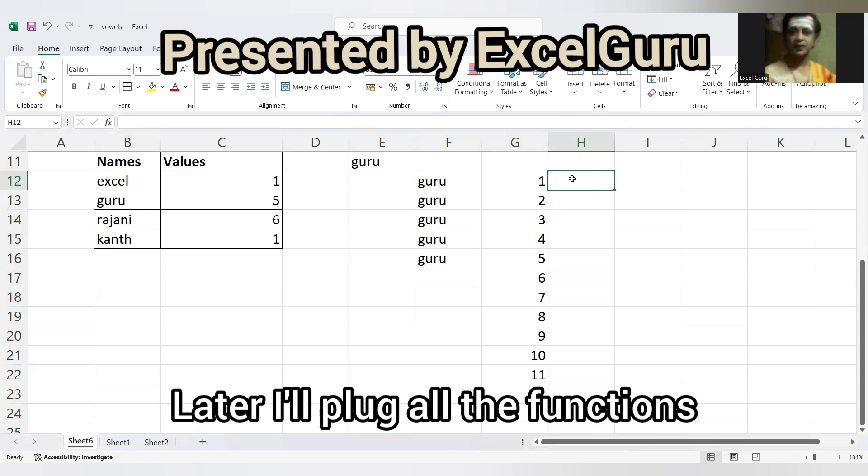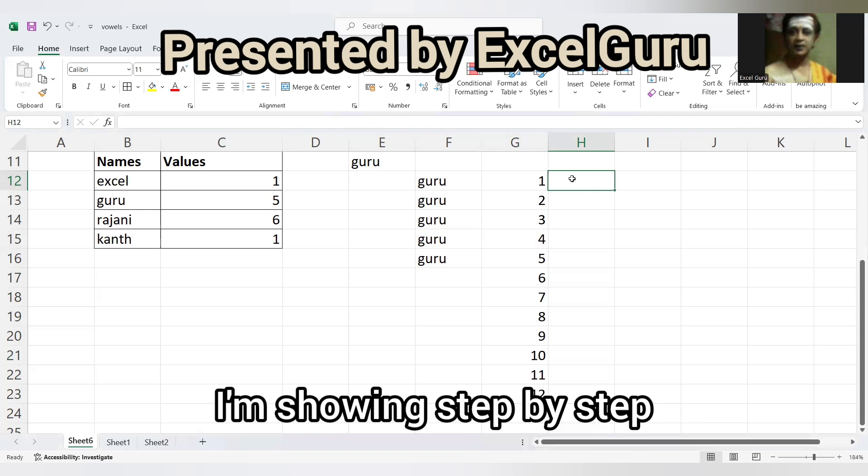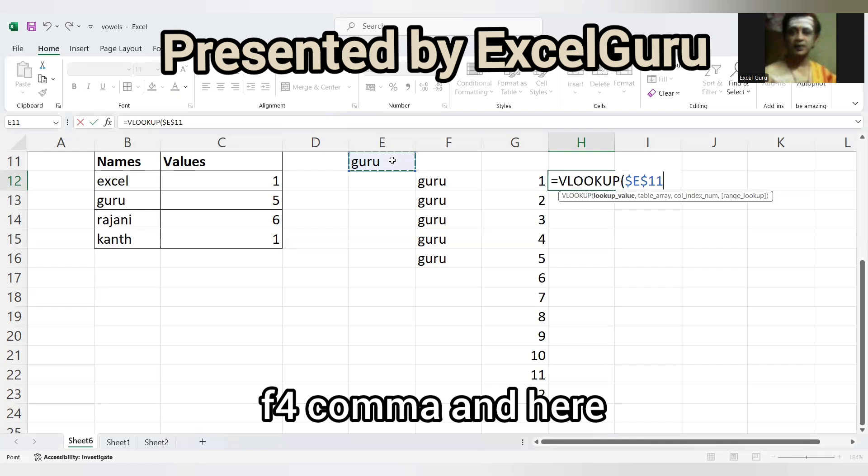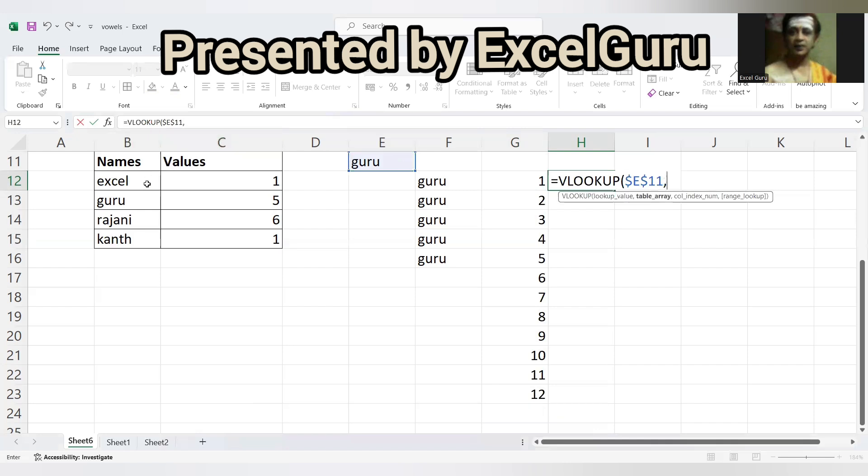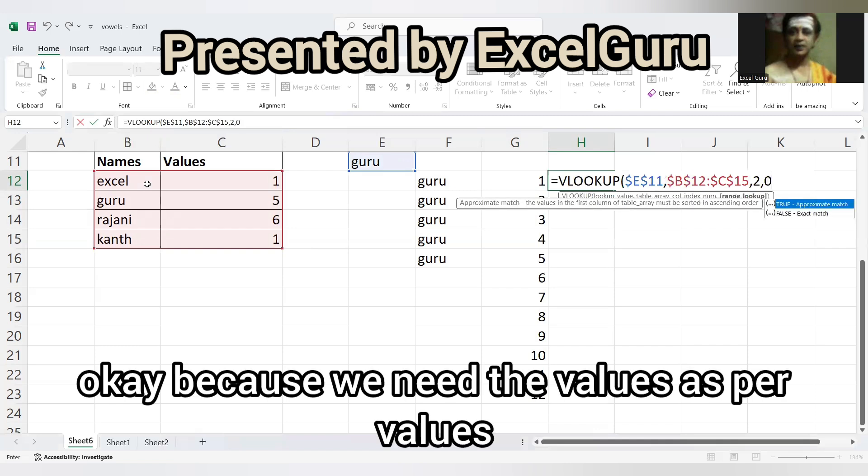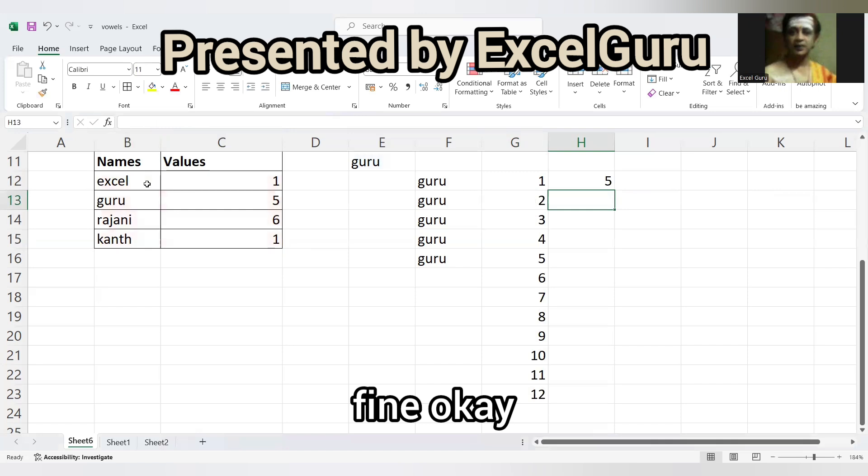Now what I'll do here is another function. Later I'll club all the functions. I'm showing step by step - VLOOKUP of Guru, F4, and here select the range, F4, comma two, FALSE because we need the values as per values.